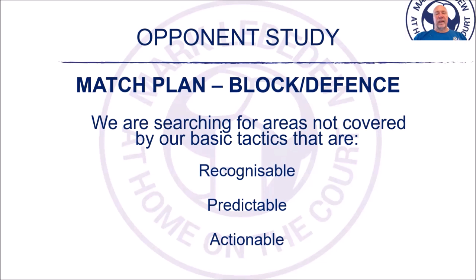They need to be something that we can do something about with our team. One of the mistakes that coaches can make is that with video, fast forward and freeze frame, they'll be able to find some little thing — when the left finger is pointed in that direction, spiker X hits cross court 100% of the time. That is predictable and actionable; we can block cross court, for example. But it's not something that blockers can see, or indeed should be looking for, in the course of a match.